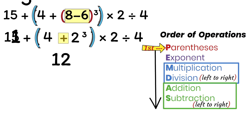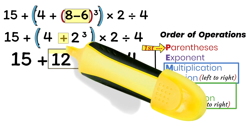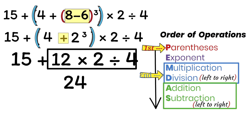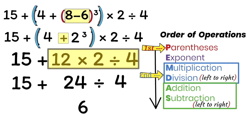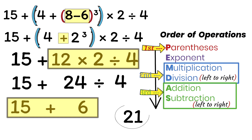We now have 15 plus 12 times 2 divided by 4. From PEMDAS, our next operation will be multiplication and division from left to right. We will multiply 12 and 2 to get 24, then divide 24 by 4 to get 6. We now have 15 plus 6. Finally, using PEMDAS, we perform addition and subtraction from left to right. 15 plus 6 gives us 21 as our final answer.